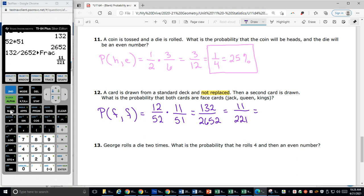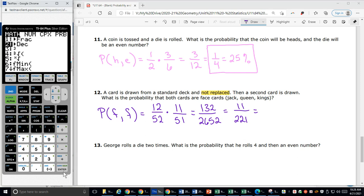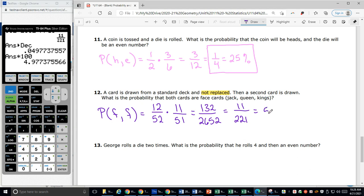So I'm going to hit math, change that to a decimal for me, and then make it a percentage by multiplying by 100. I get 4.9% of the time. But after the nine, it's a seven. So that's going to bump the nine, which will bump the four. So about 5% of the time, I will draw two face cards in a row.